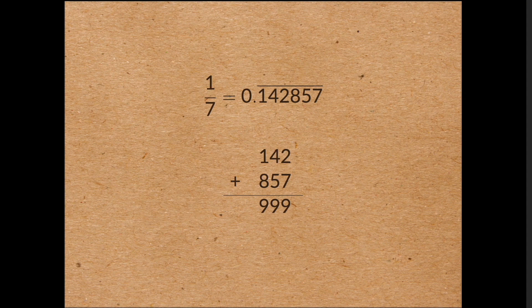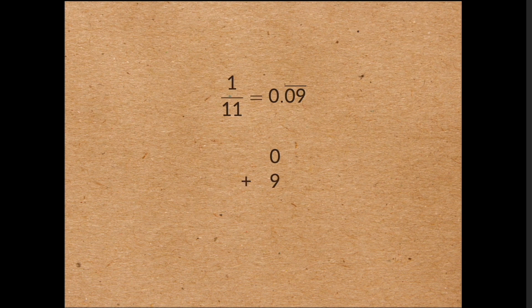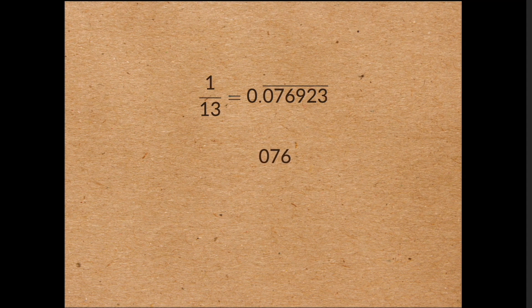So 1 on 11 is 0.09, and 0 plus 9 is 9. 1 on 13, 1 on 17, and so on.